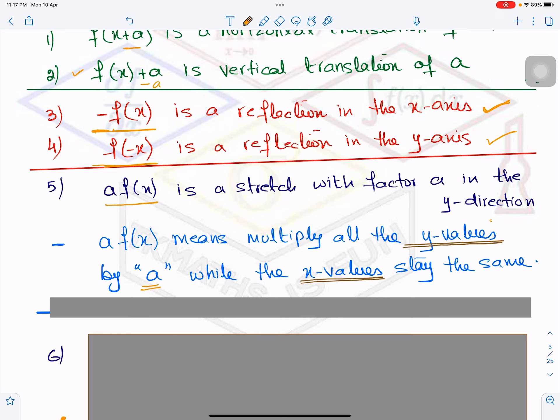Then comes a times f(x). Now your main function f(x) is multiplied by a. What does it mean? It means it is a stretch with factor a in the y direction. So this reflects that there will be a stretch in the y direction.